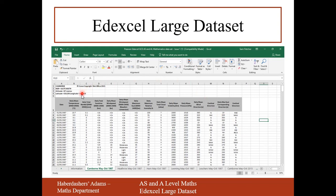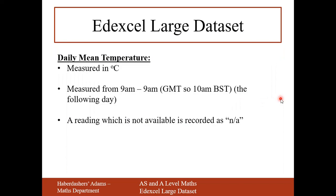This is what the large data set looks like — lots of different statistics for each place for each time period. This is the data set for Camborne, May to October 1987. You can see there are many different variables. The first is daily mean temperature, measured in degrees Celsius. It's the mean temperature from 9am on the day of measurement to 9am the next day — though during British Summer Time that becomes 10am the following day.